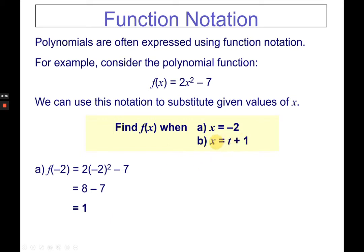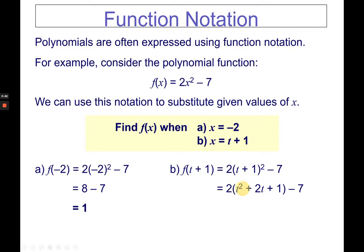If the value of x is t plus 1, then x becomes t plus 1, and you perform binomial square or the FOIL method. It results in t squared plus 2t plus 1. Multiply every term by 2 to get 2t squared plus 4t plus 2, then copy minus 7. So 2 minus 7 is negative 5, giving the final answer. That's how you perform function notation — the input can be an integer or a binomial expression.